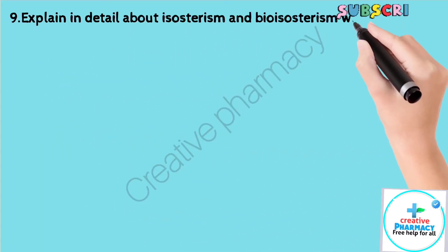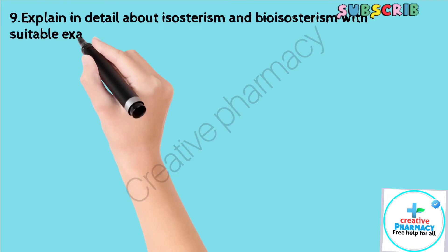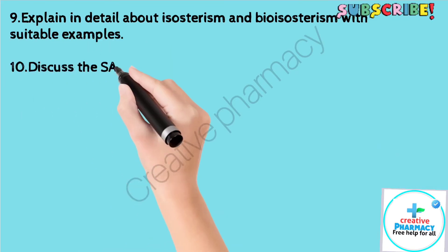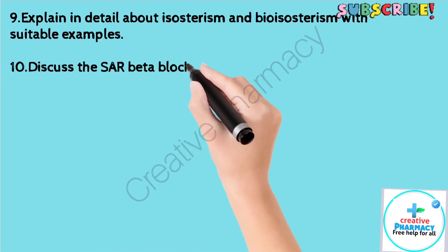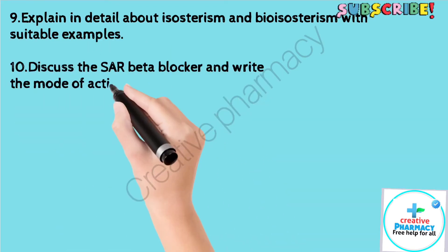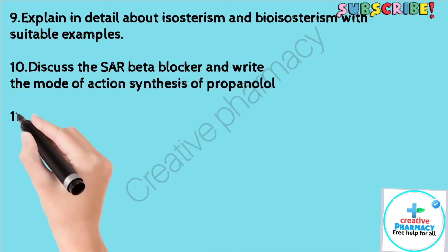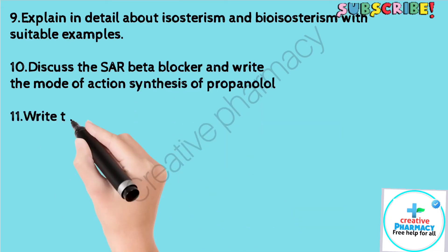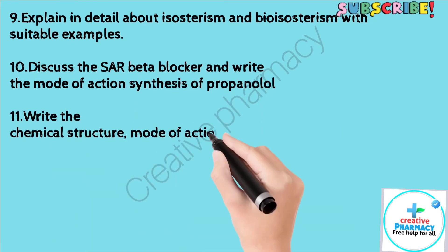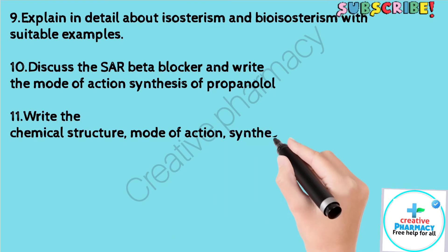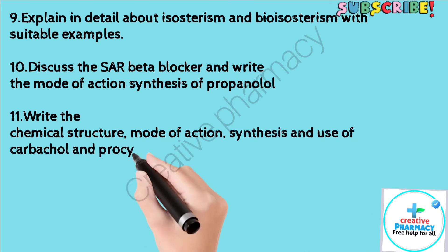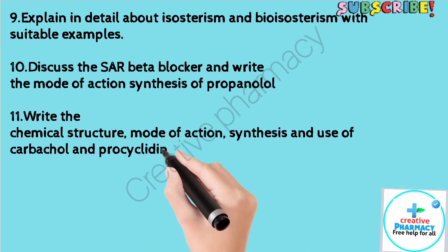Question 9: Explain in detail about isosterism and bioisosterism with suitable examples. Question 10: Discuss the SAR of beta blockers and write the mode of action and synthesis of propranolol. Question 11: Write the chemical structure, mode of action, synthesis, and use of carbachol and procyclidine.